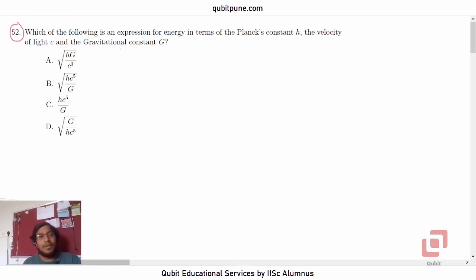Which of the following is an expression for energy in terms of the Planck's constant h, the velocity of light c, and the gravitational constant G? Root of h into G upon c cube, root of h into c to the power 5 upon G, h into c to the power 5 upon G, and d root of G upon h into c to the power 5.